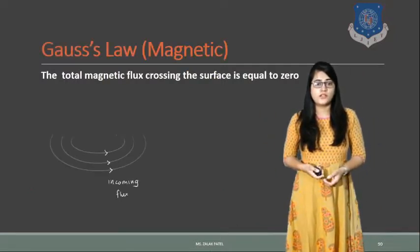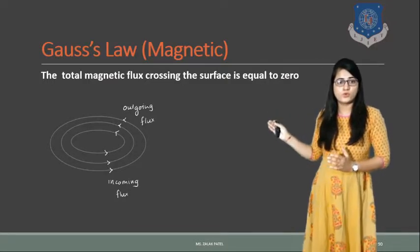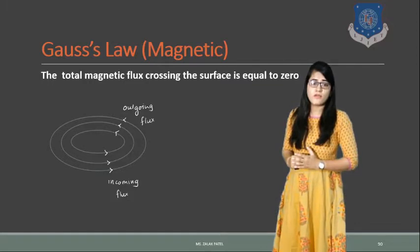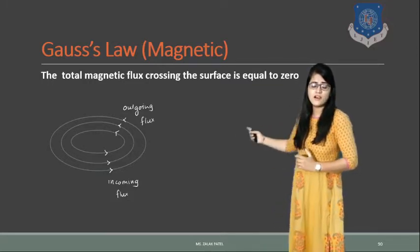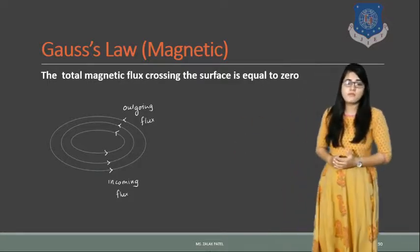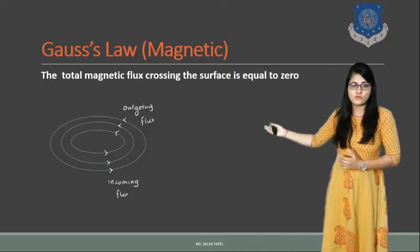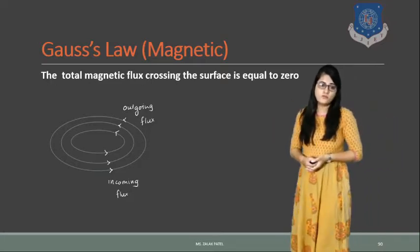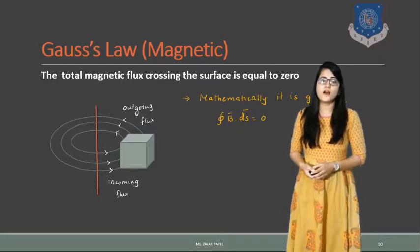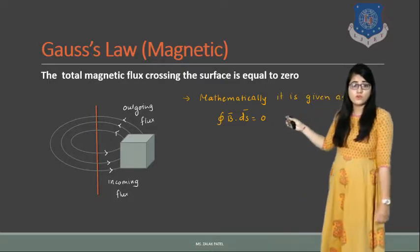The third equation is Gauss's law for the magnetic field. We discussed in Unit 2 that the total magnetic flux crossing a closed surface equals 0. This means incoming flux equals outgoing flux, so the total is 0. If you see this as a cube, incoming flux equals outgoing flux, and the surface integration of B dot dS equals 0. This is the mathematical form of Gauss's law for the magnetic field.